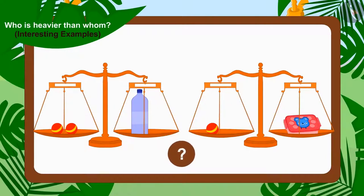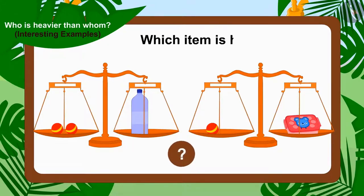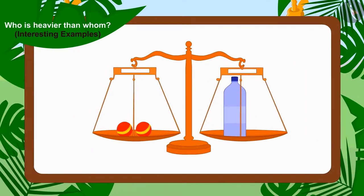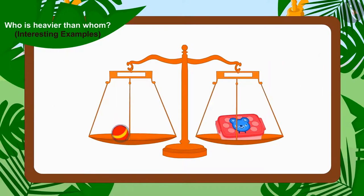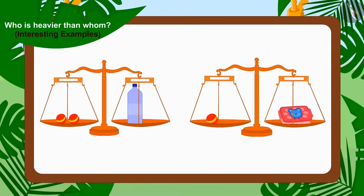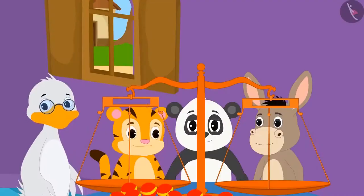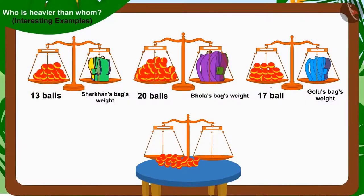Children, can you look at these scales and tell which of these two items is heavier? The water bottle weighs two balls and the tiffin box weighs one ball. So the weight of the water bottle is more than the weight of the tiffin box.